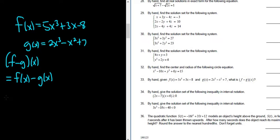Let's be really careful here. We'll start by replacing f(x) with what it is: f(x) is 5x³ + 3x - 8. So that is this piece here.